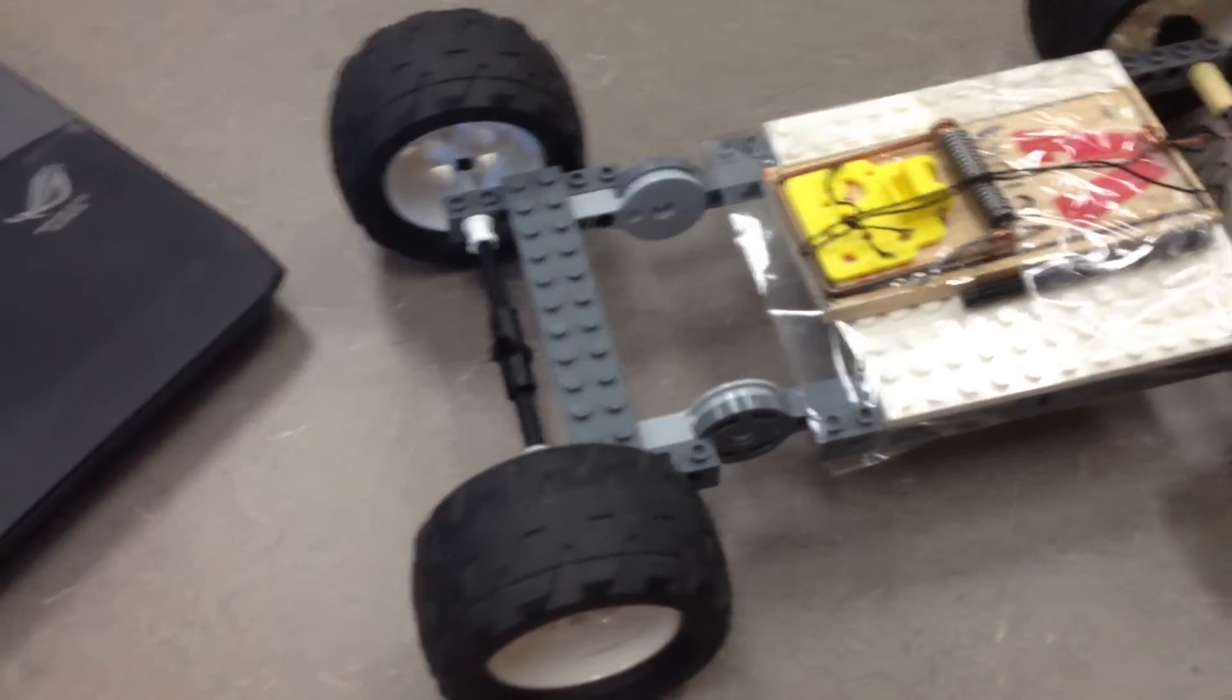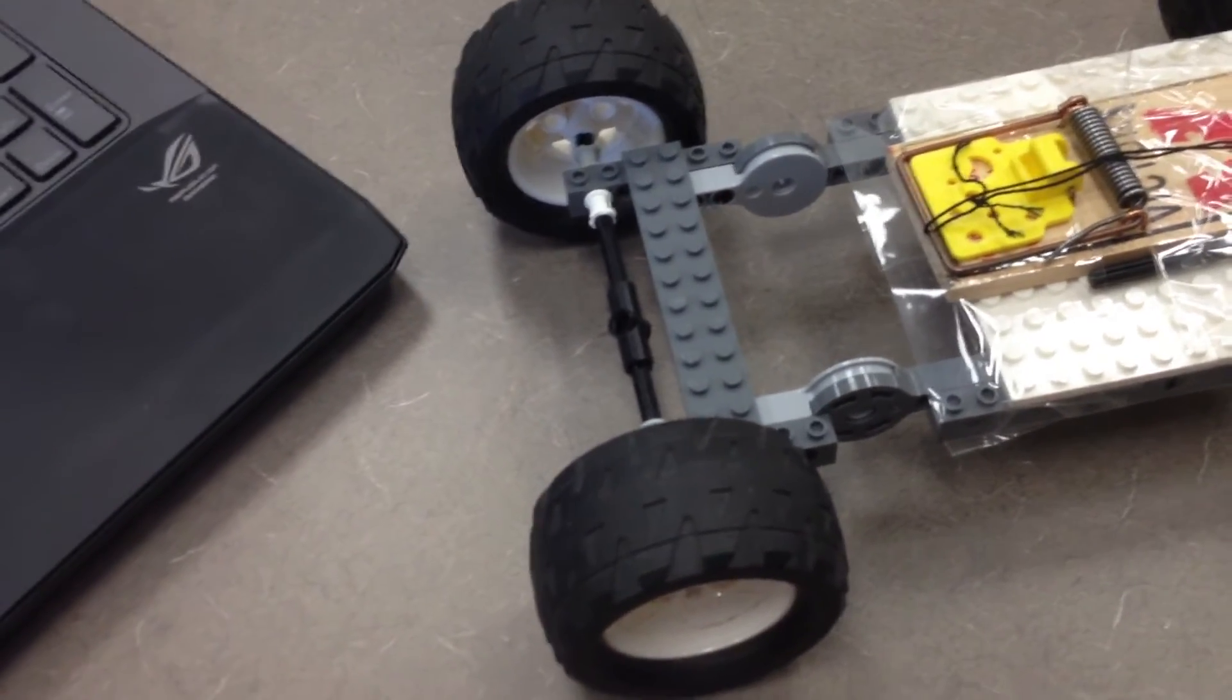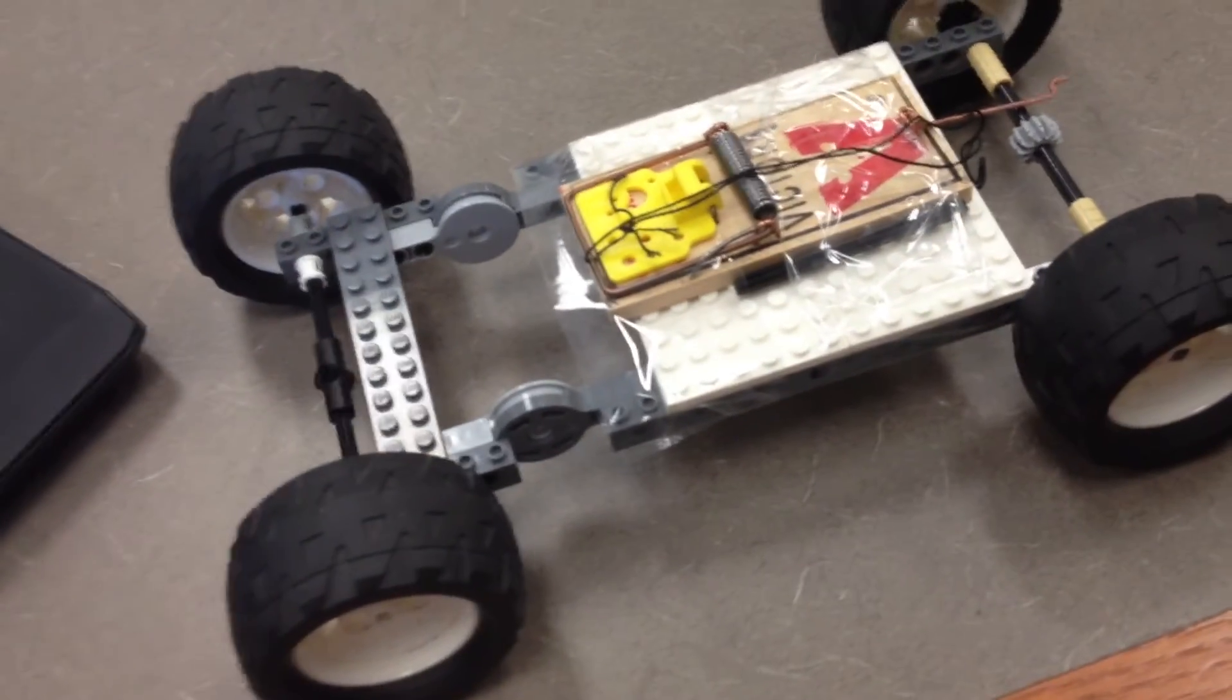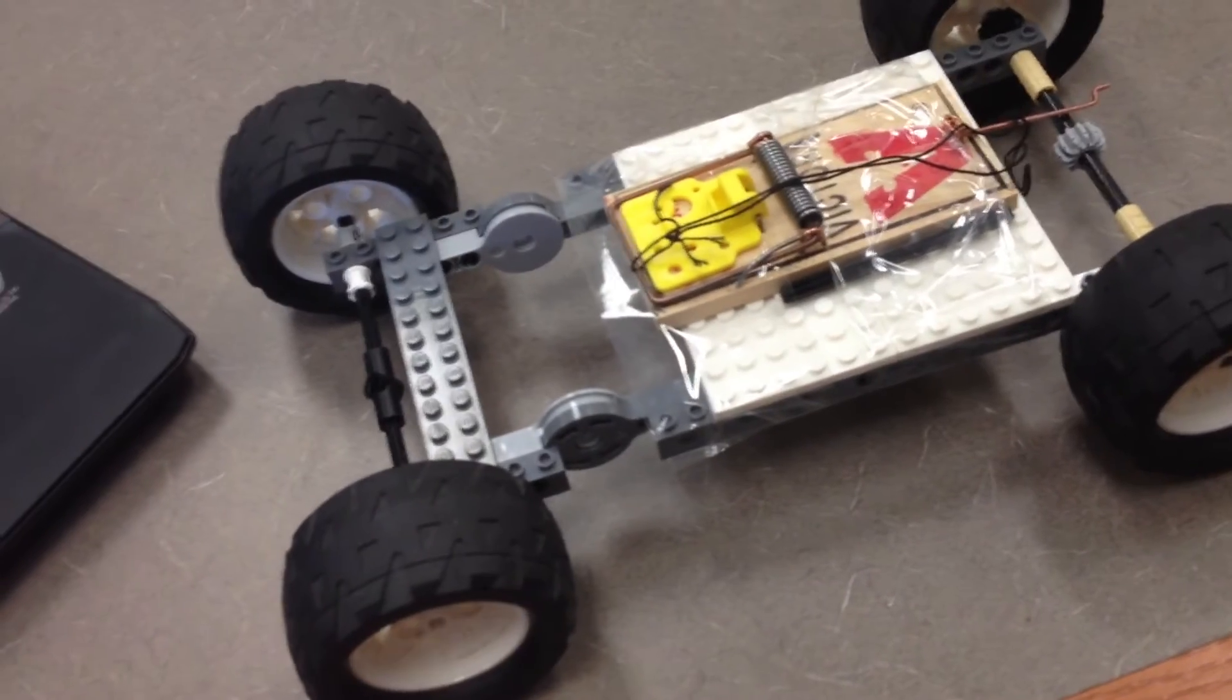Newton's third law is equal and opposite reaction. The goal is to put as much energy from the mousetrap into forward kinetic energy.